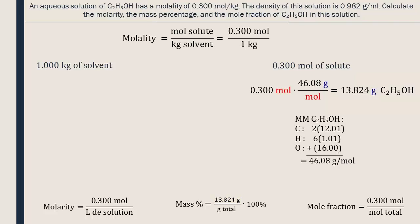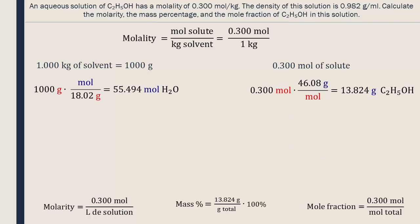One kilogram of water is equal to 1000 grams. We can divide the mass of water by its molar mass to solve for the number of moles of water in the solution.